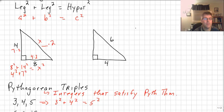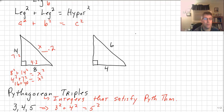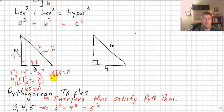We can say 4 squared plus 7 squared equals x squared, and that is 16 plus 49 equals x squared. 16 plus 49 is 65, so 65 equals x squared. We don't want x squared, we want x, so the square root of 65 equals x. But really it's the square root of 65 times 2, or 2 radical 65.